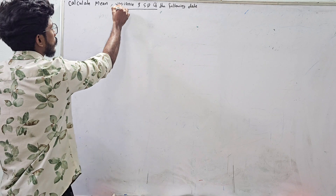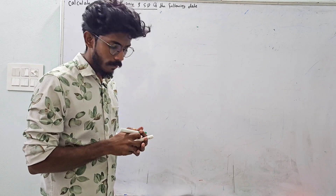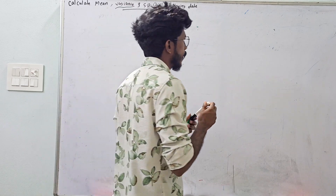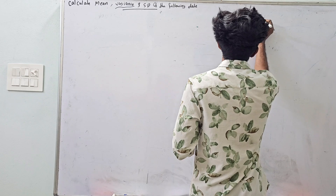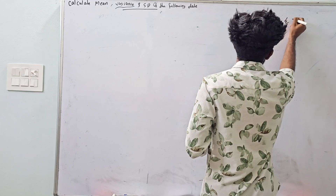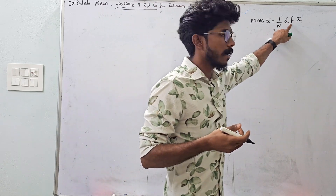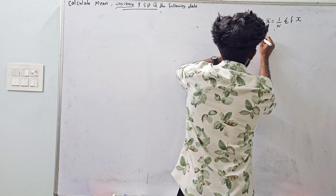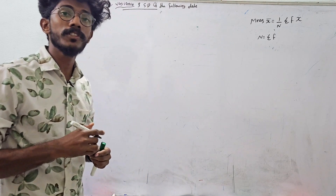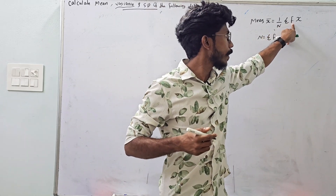You can take a mean deviation from the mean. If you take the mean variance of standard deviation from the mean variance, and if you want to write this problem, you will write the same thing. So what you will do is take a formula. Where do you write the mean? You write the mean. The formula is 1 by n into summation f into x. This is the mean formula.